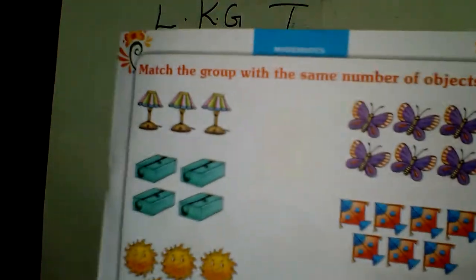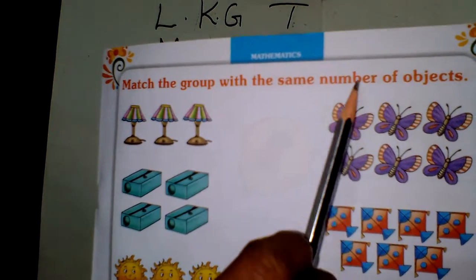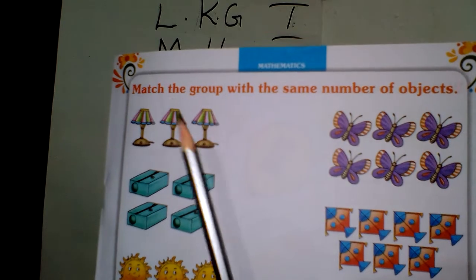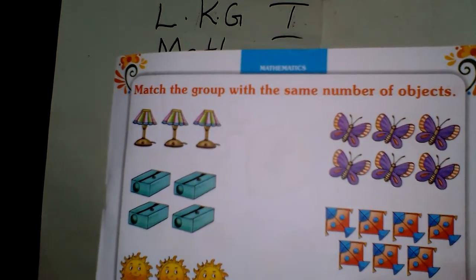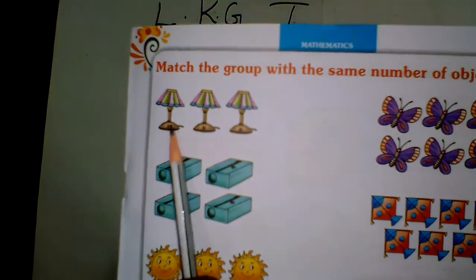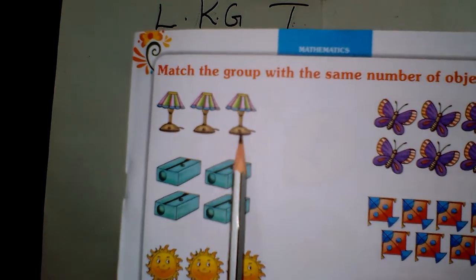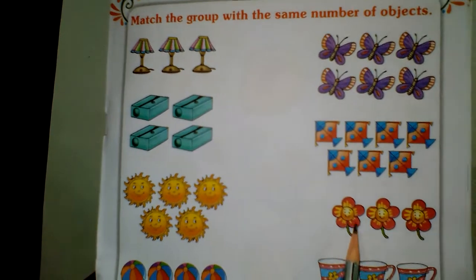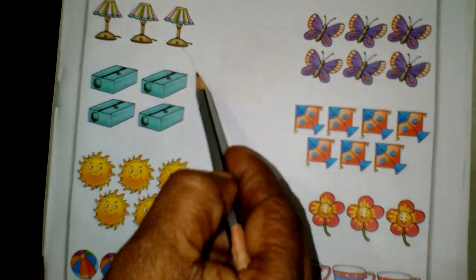Next page. Match the group with the same number of objects. First, look at the picture. How much counted? One, two, three. Where is another object? Three. This is one, two, three. Because draw the line.